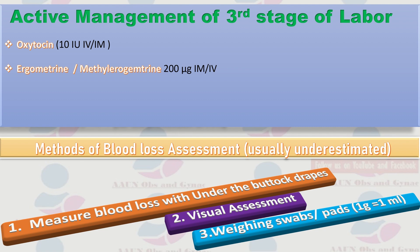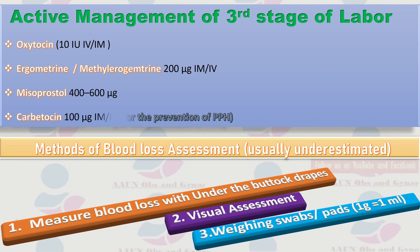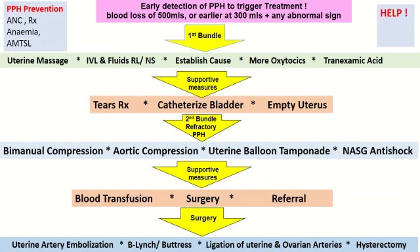Other options include ergometrine or methylergometrine 200 micrograms IM or IV, misoprostol 400 to 600 micrograms, and carbetocin 100 micrograms IM or IV for prevention of PPH. This algorithm explains the management of postpartum hemorrhage, beginning with PPH prevention starting from antenatal care, treatment of anemia, and active management of third stage of labor.